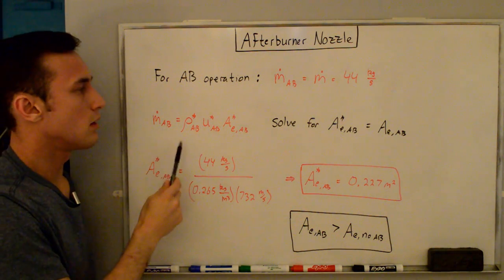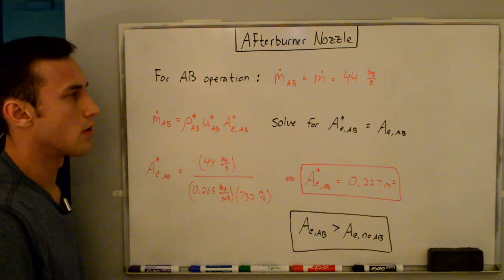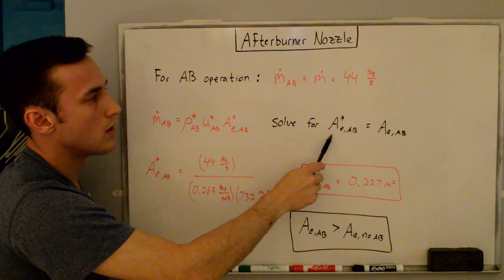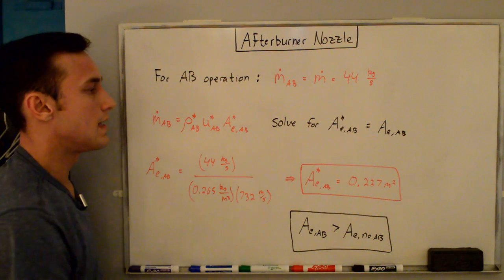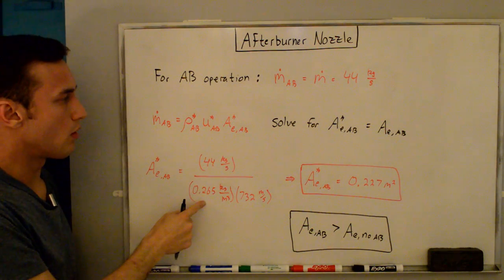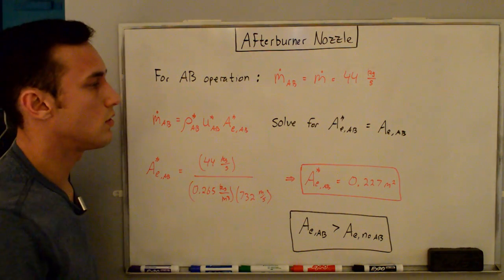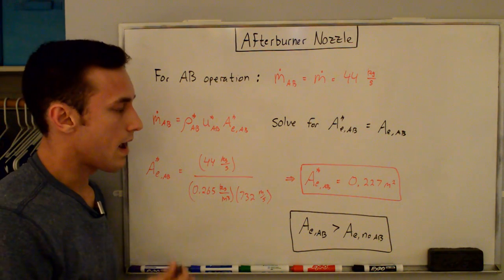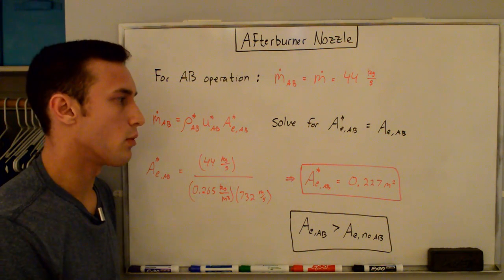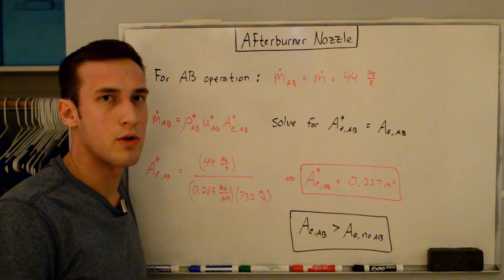Using the same choked-flow equation with afterburner values: M-dot_AB = ρ*_AB × U*_AB × AE_AB. Solving for the exit area: AE_AB = M-dot / (ρ*_AB × U*_AB) = 44 / (0.265 × 732) = 0.227 m². That exit area is greater than the non-afterburning exit area of 0.17 m², which is the example showing you why you have to open up the nozzle exit area when you turn on the afterburner. Thanks for watching.